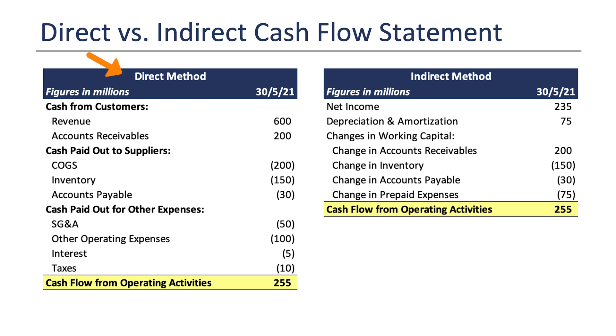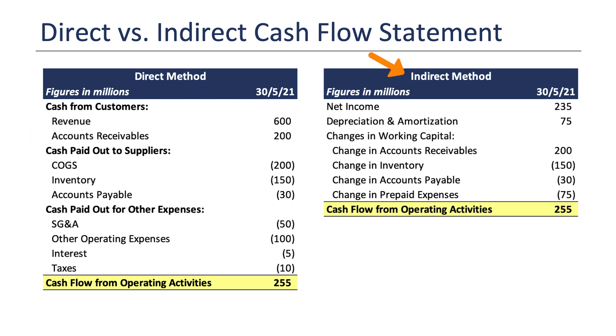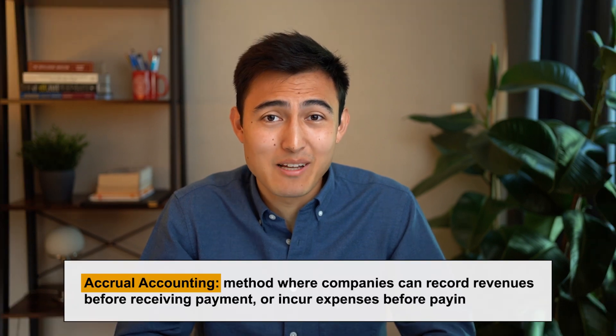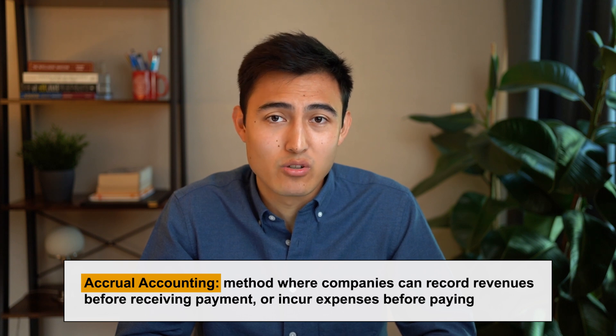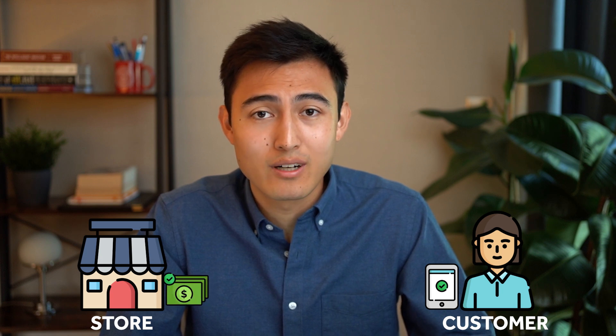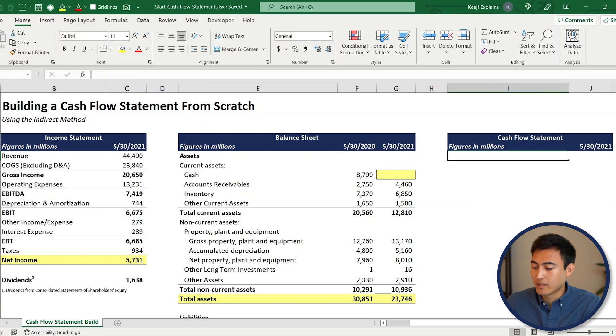The direct method only uses cash transactions and ignores non-cash transactions to reach net income. The indirect method starts with net income and eventually reaches the same net cash flow from operating activities, but still accounts for non-cash transactions like depreciation. The indirect method is more popular as most businesses use accrual accounting — meaning they record revenues or expenses when a transaction occurs rather than when cash is actually received or dispensed. For example, if you deliver an iPhone to a customer but get paid in 30 days, under accrual accounting that revenue is already earned; under cash basis it wouldn't be recognized until the cash arrives.